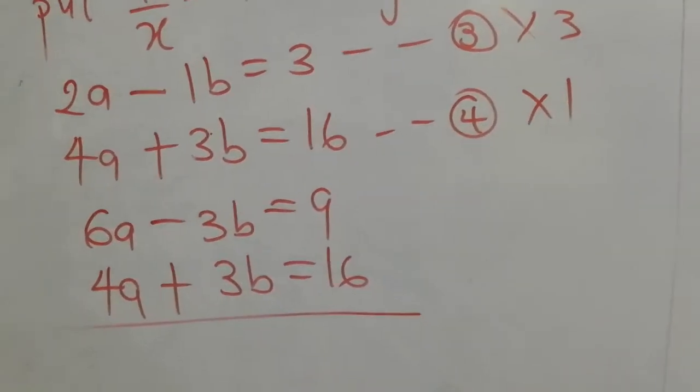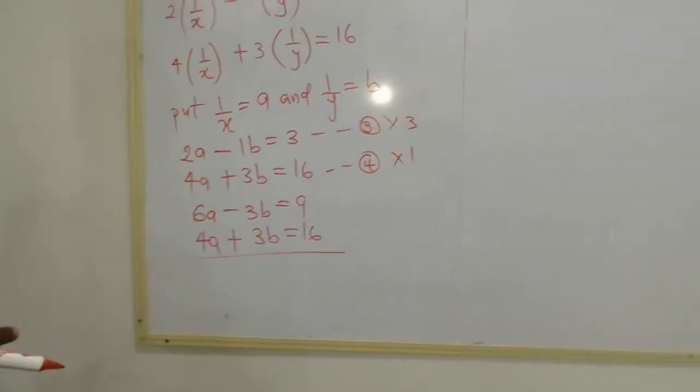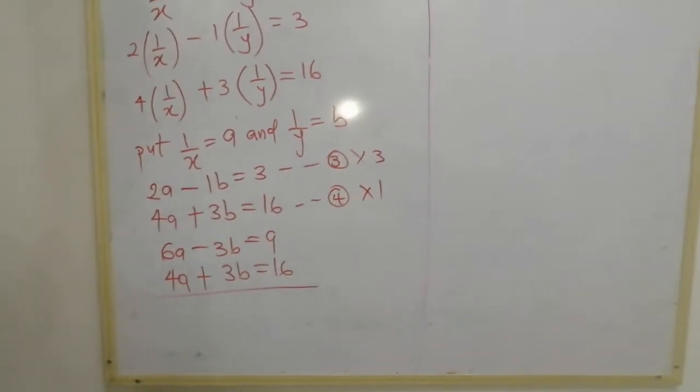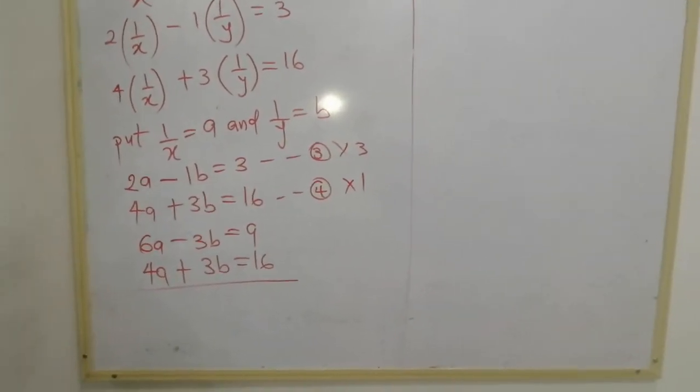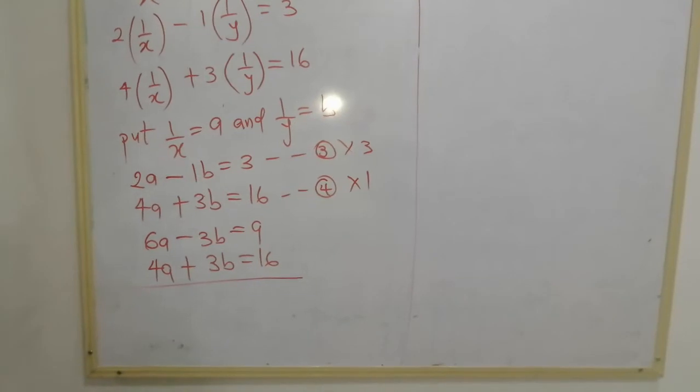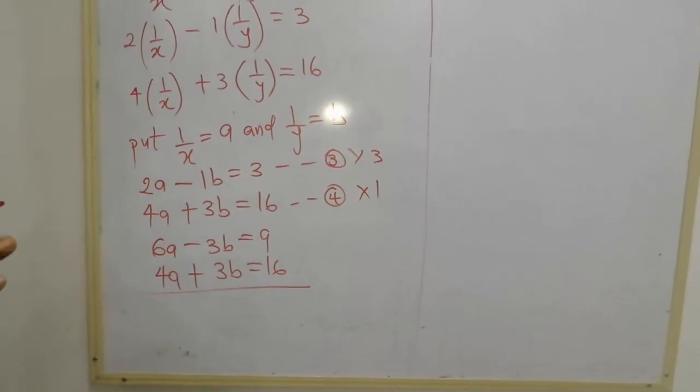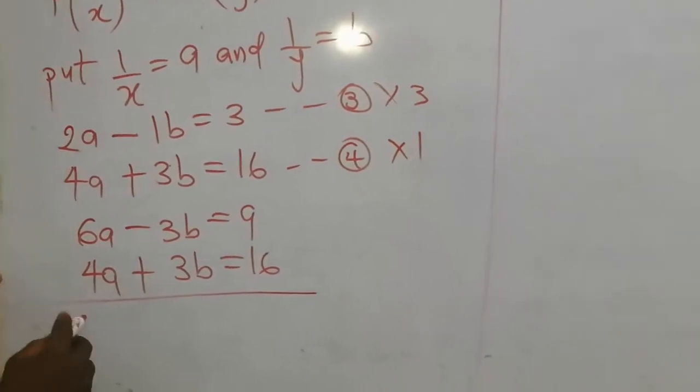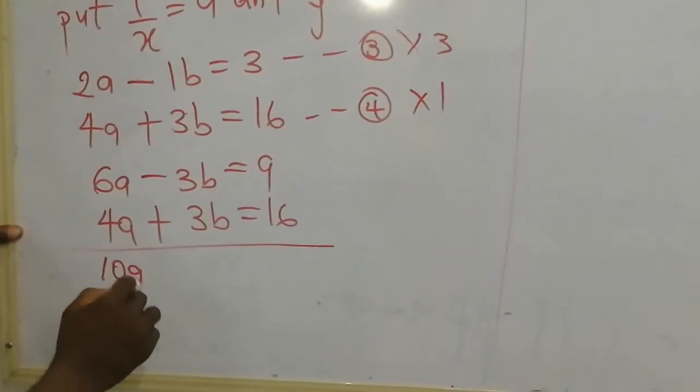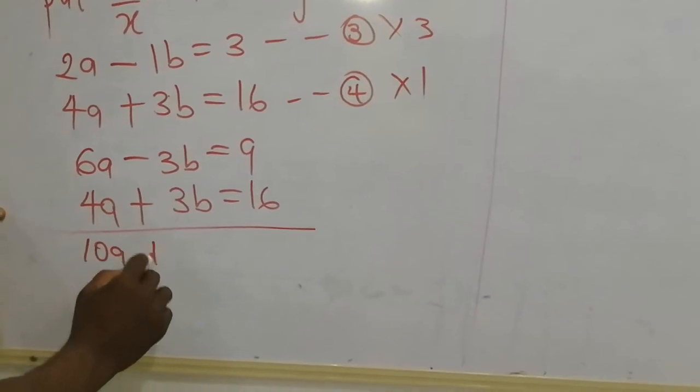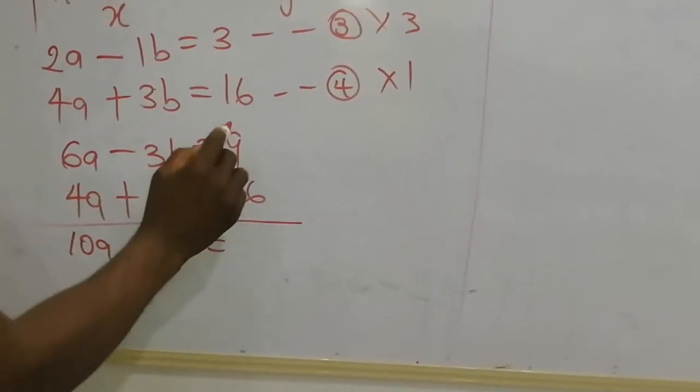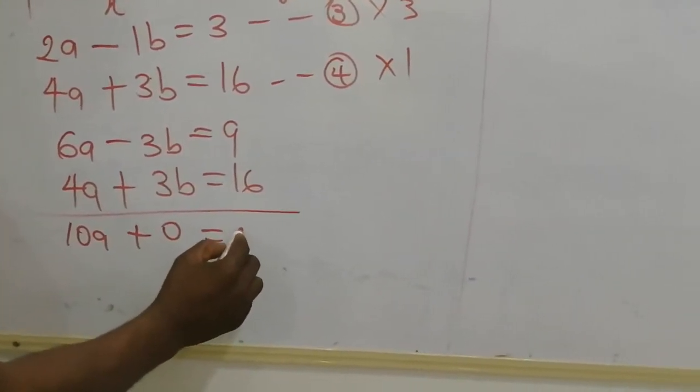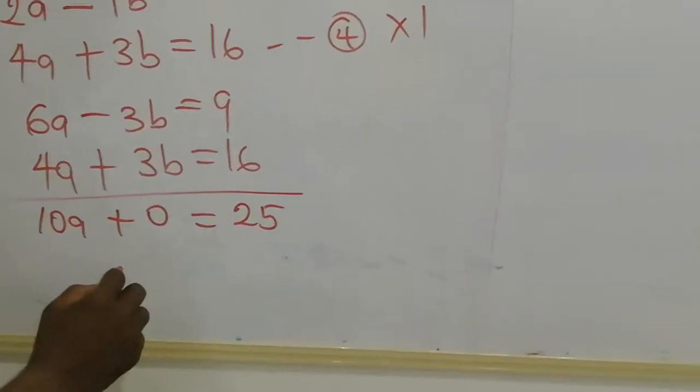Then remember, the rule says if the signs before the coefficients are the same, you find the difference. If the signs before the coefficients are different, you add. So we are going to add the two equations now. 4a plus 6a is 10a. Minus 3b plus 3b equals 0. 9 plus 16 equals 25.